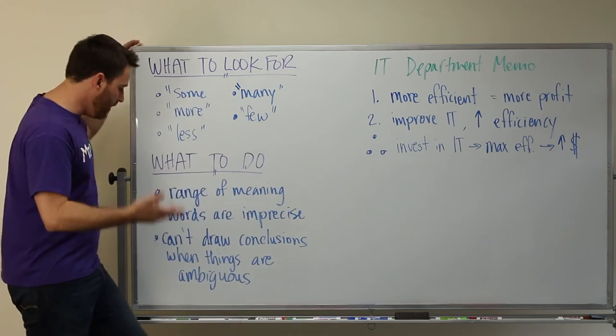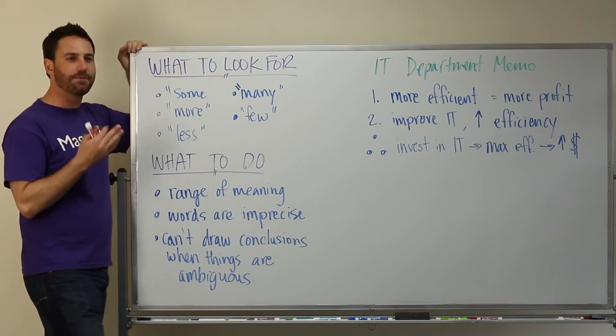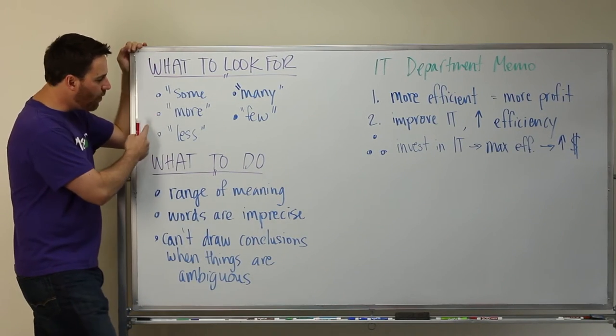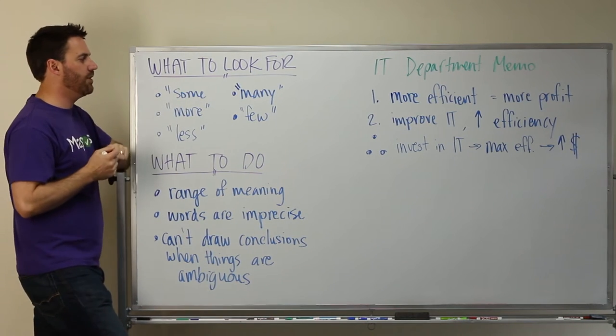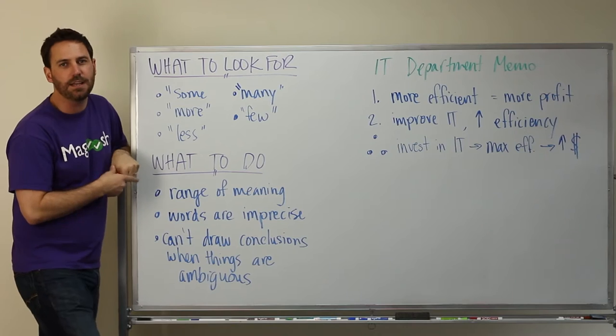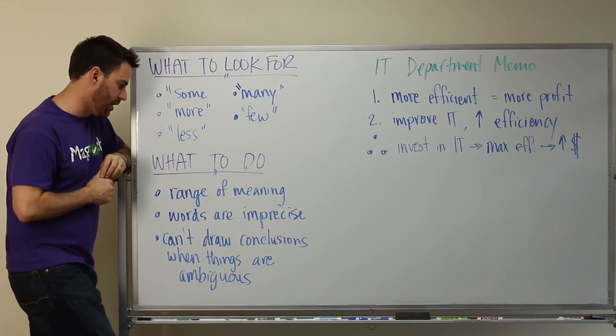That sort of difference is not borne out of the sentence or by using the word more. And so when you're analyzing an argument, keep your eye out for these vague words like some, more, less, many, few. These are words that don't have a precise meaning and so that means there is potentially a flaw in the argument.